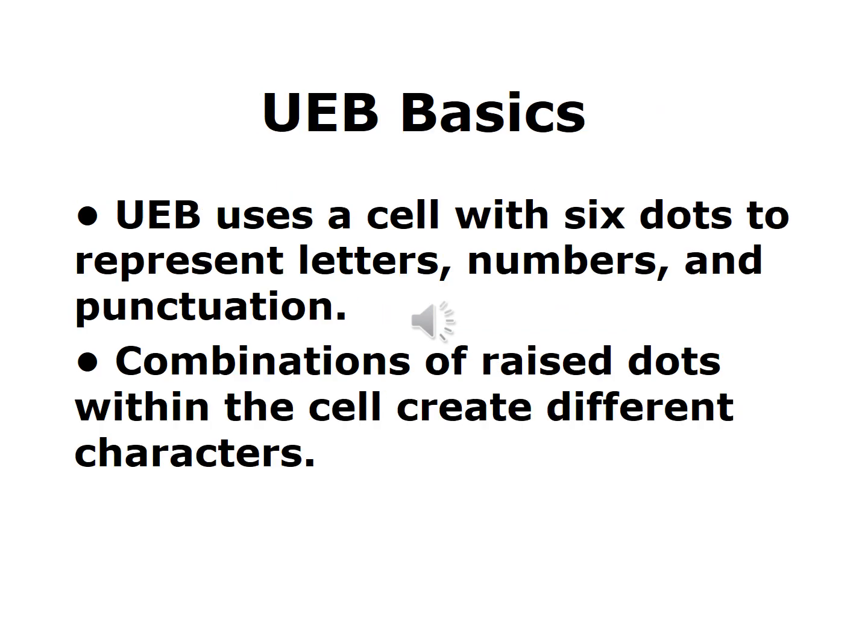Let's delve into the basics of UEB. Like other Braille codes, it uses a cell of six dots to represent letters, numbers, and punctuation. The absence or presence of raised dots creates different characters. Braille readers learn these combinations to decipher text by touch.